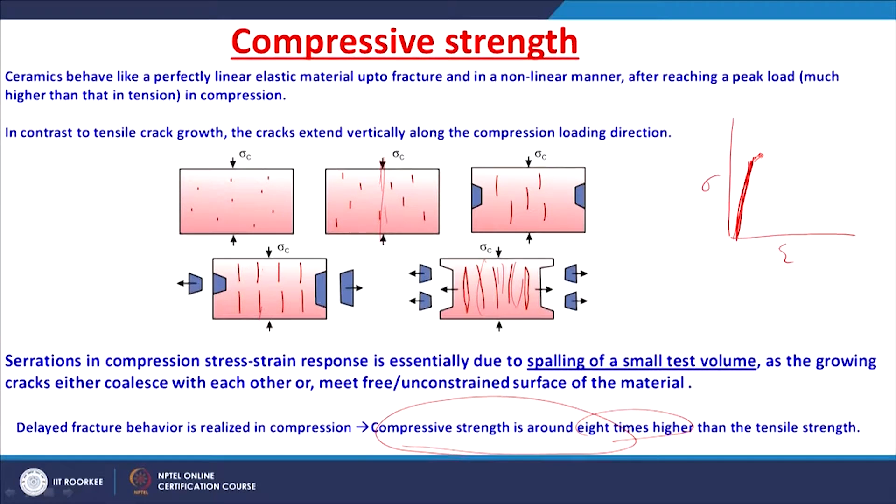For example, for aluminum oxide, the compressive strength is around 800 to 1000 MPa. In tensile loading conditions, the strength is around 300 MPa. Whereas for plain carbon steel, either in compressive or tensile loading conditions, the strength is around 250 MPa. So there is a large difference in strength between compressive and tensile loading conditions for ceramic material — 300 to 350 MPa in tension and 800 to 1000 MPa in compression are typically observed for aluminum oxide ceramic materials.